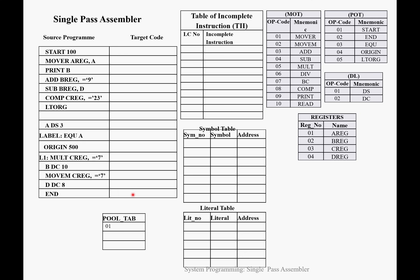Now let us consider how to find the target code. The first statement is START 100. START is an assembly directive whose position is 01, first operand is not present (dash), and 100 is a constant. Using START 100, we assign the location counter LC, so LC will start with 100. From the next instruction onward we assign LC.